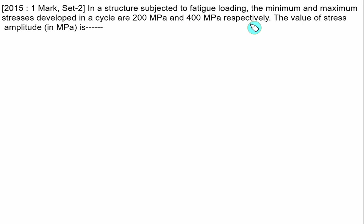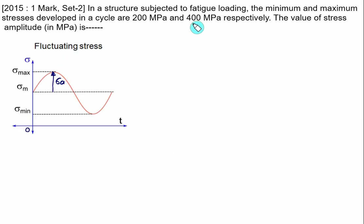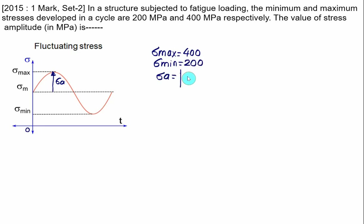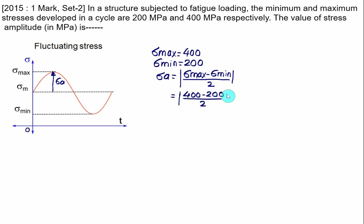Another example: a structure with minimum stress 200 MPa and maximum stress 400 MPa — both positive values indicating fluctuating stress. Stress amplitude = |400 − 200| / 2 = 200 / 2 = 100 MPa. This is a straightforward type of question commonly asked in GATE examinations on stress variation.